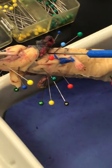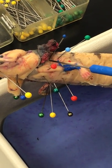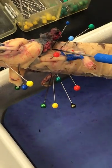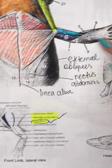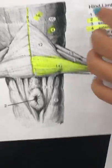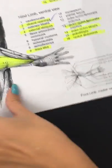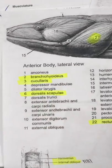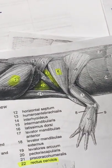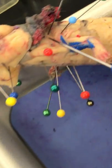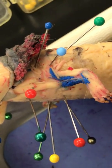This is cucullaris. Yeah, it's near the arm. Here, here, here, here. Number 3, cucullaris. This one is cucullaris — that's a huge one.